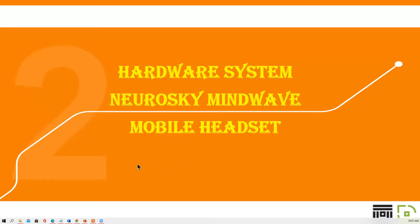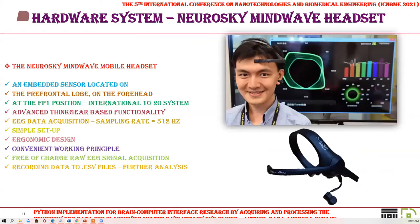The BCI application involved raw EEG signal acquisition from the biosensor of the Neurosky portable headset. The Neurosky headset has an embedded sensor located at the prefrontal lobe on the forehead at the FP1 position according to the International 10-20 EEG system. The Neurosky is based on an embedded ThinkGear chip which enables EEG data acquisition with a sampling rate of 512 Hz.